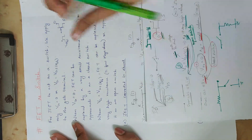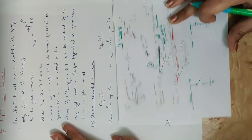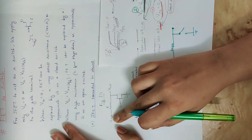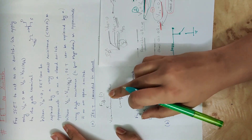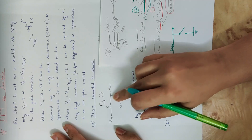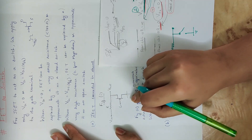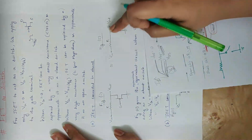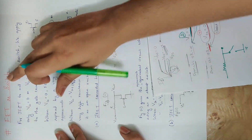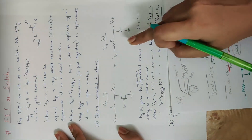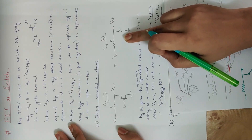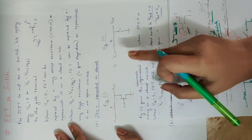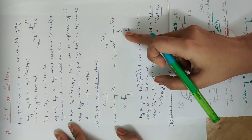Suppose we connect J-FET in parallel. We have an input voltage, a resistance R, and an output voltage — J-FET connected in parallel. Figure 2 is the approximate equivalent circuit of this configuration.